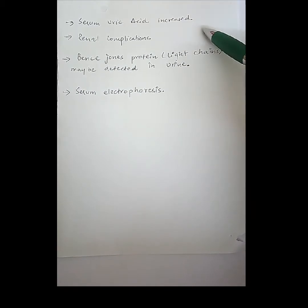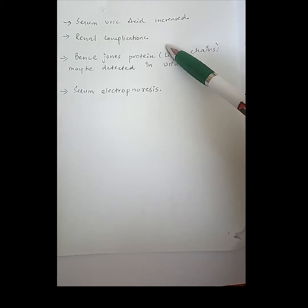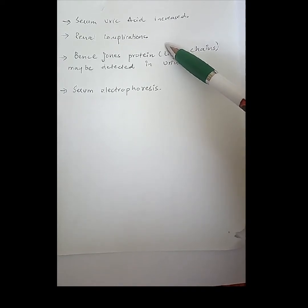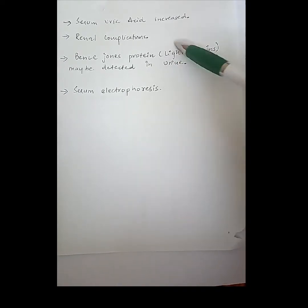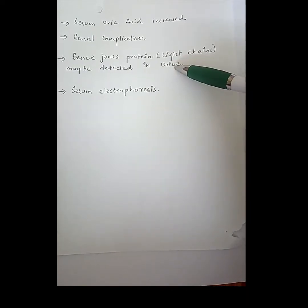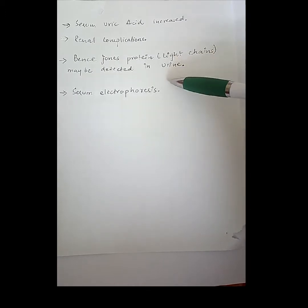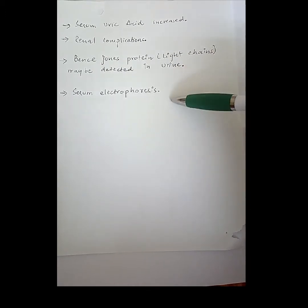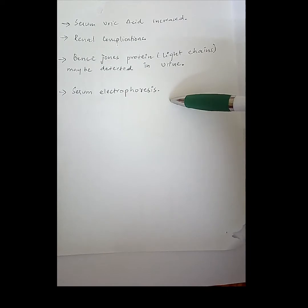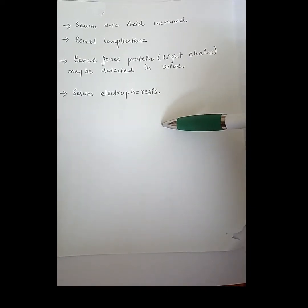Serum uric acid is increased. Renal complications need to be observed by monitoring serum creatinine levels. In urine tests, Bence Jones protein, meaning light chains, are mostly detected. Serum electrophoresis is also helpful for diagnosis.